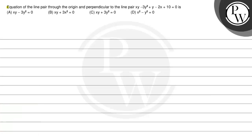Let us read the question. Equation of the line pair through the origin and perpendicular to the line pair xy minus 3y square plus y minus 2x plus 10 equal 0 is: option a) xy minus 3y square equal 0, option b) xy plus 3x square equal 0, option c) xy plus 3y square equal 0, option d) x square minus y square equal 0.